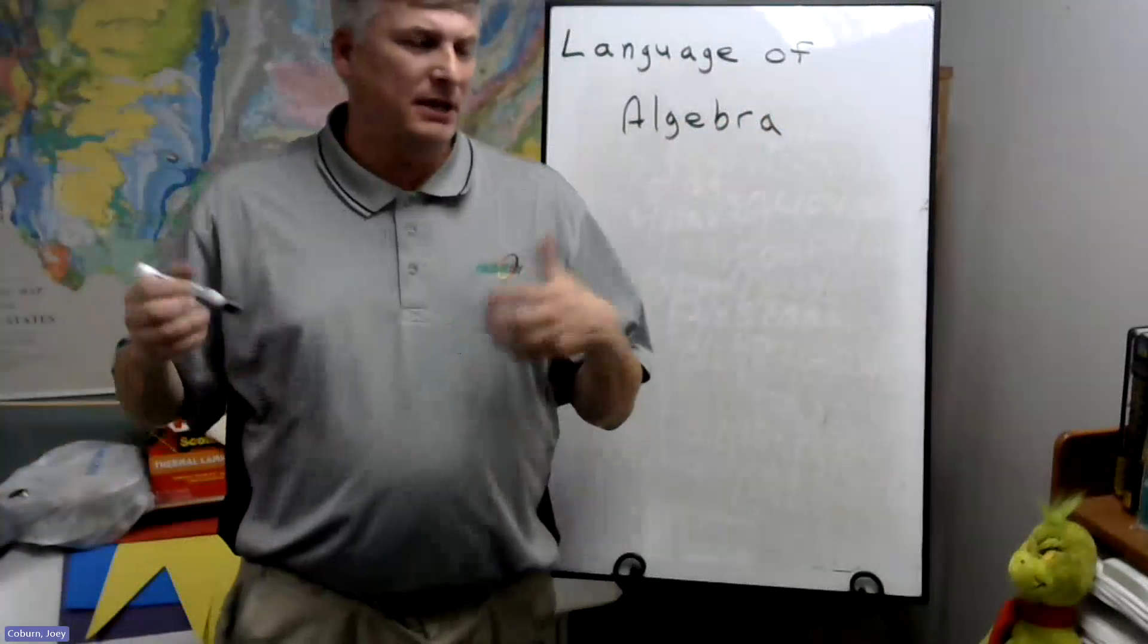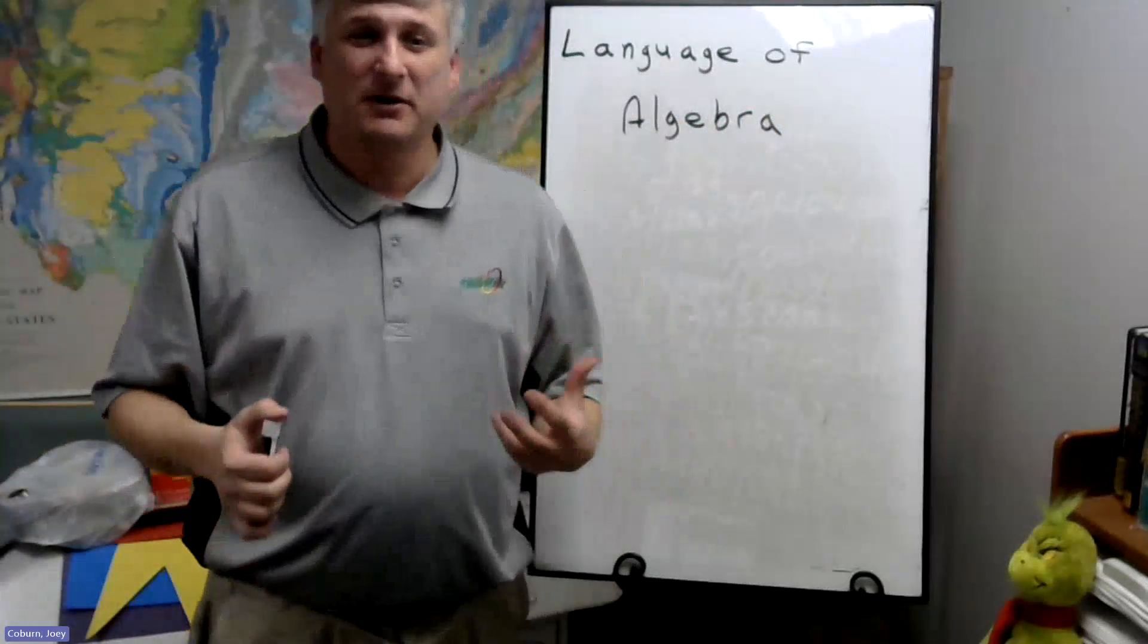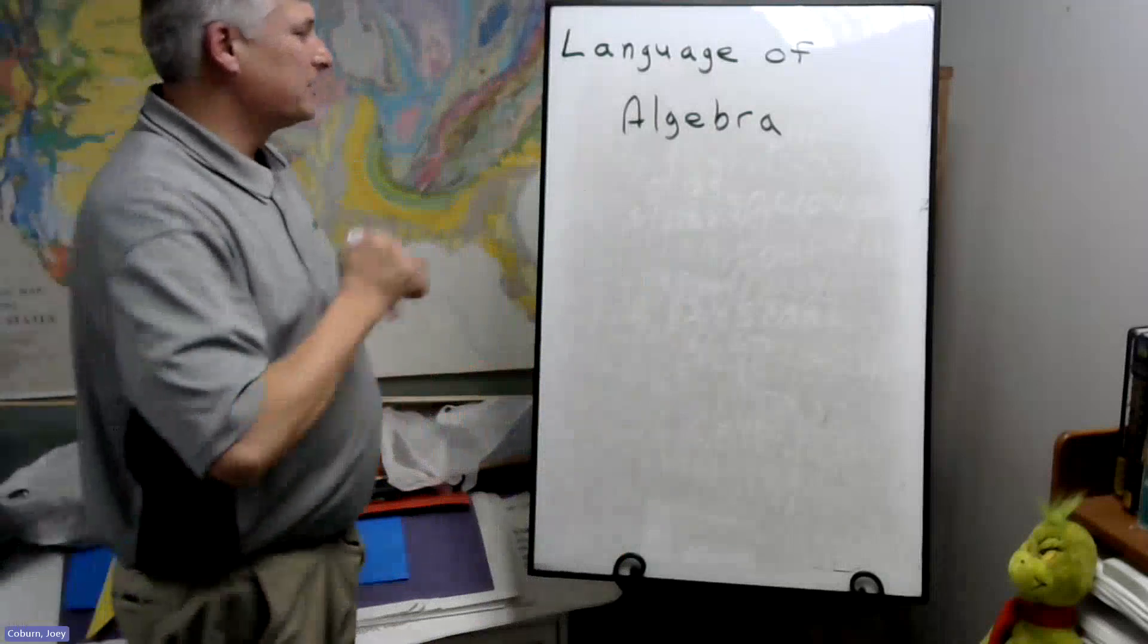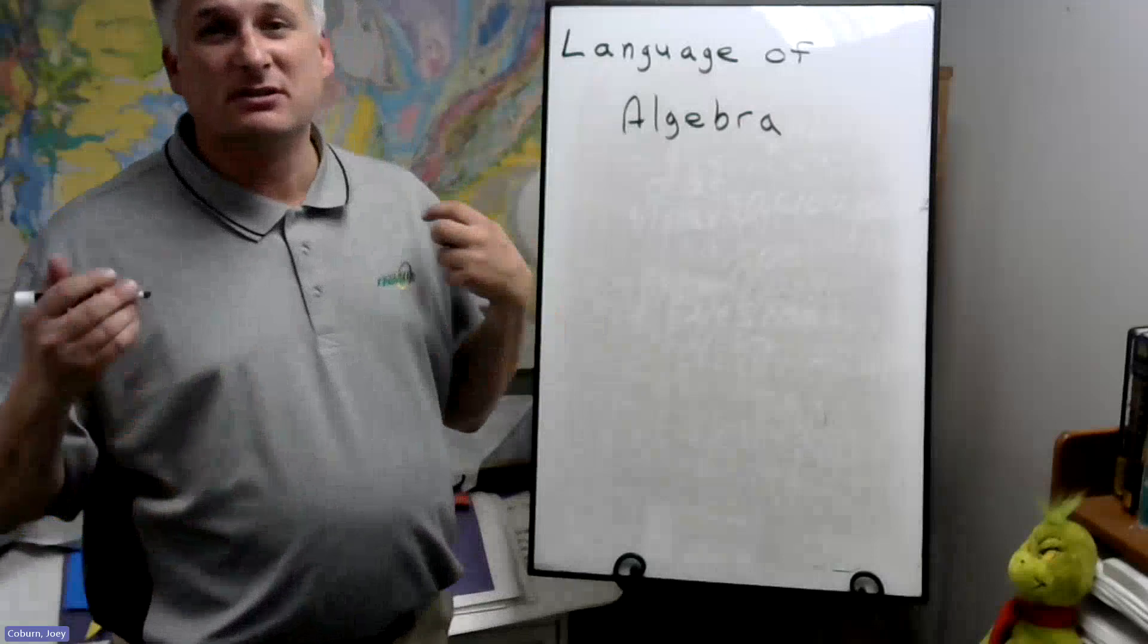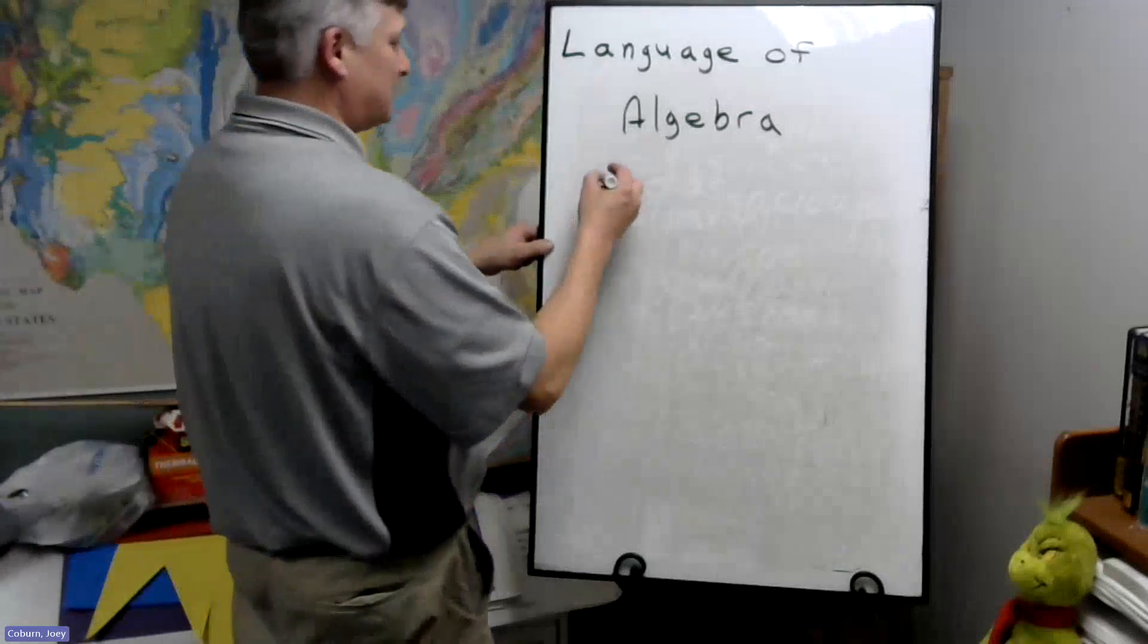For one thing in algebra, because we use X as a variable so often, we're going to stop using it as a multiplication sign and we're going to use the dot symbol instead.